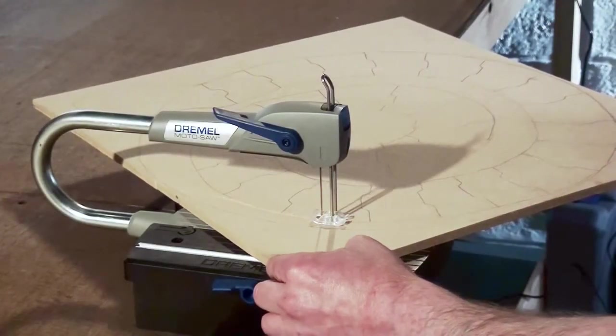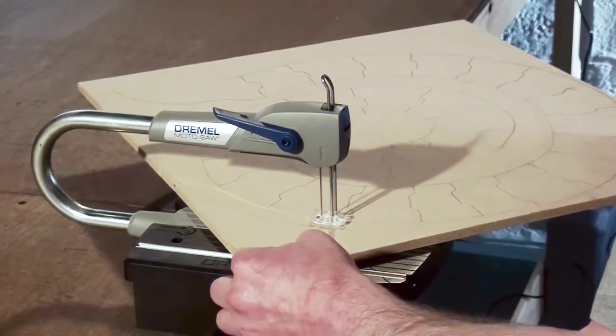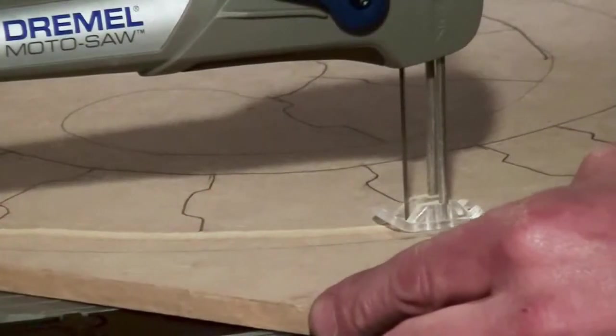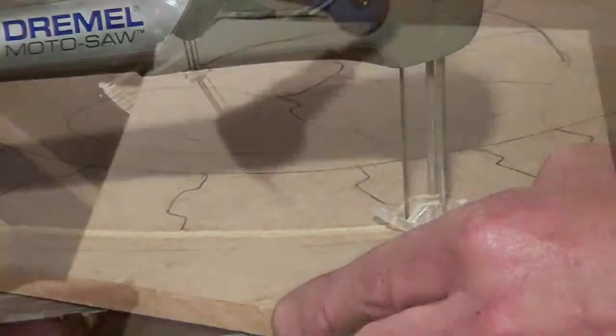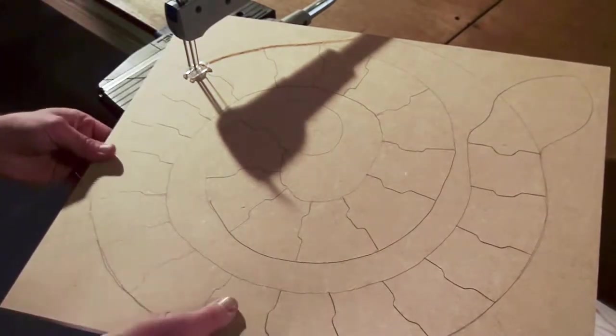Using your Dremel Motosaw and fine wood cutting blade MS-52, cut along the lines you have drawn on both sides of the body and around the head and tail. When you reach the limit of the saw throat depth, either change the direction of the blade or cut out the exposed segments of the snake as you go.